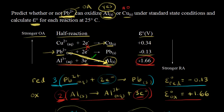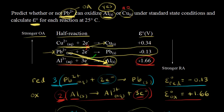Now let's do copper. We said Pb²⁺ will not be able to oxidize copper, and we'll calculate the standard cell potential to confirm. We keep the reduction half-reaction for lead. For copper, we reverse the half-reaction as written. The standard reduction potential for Cu²⁺ is +0.34 V, so for the oxidation of copper, the standard oxidation potential is −0.34 V.